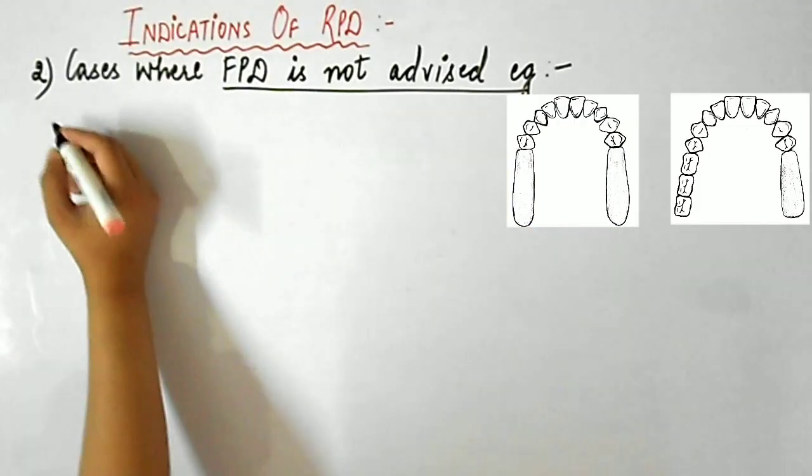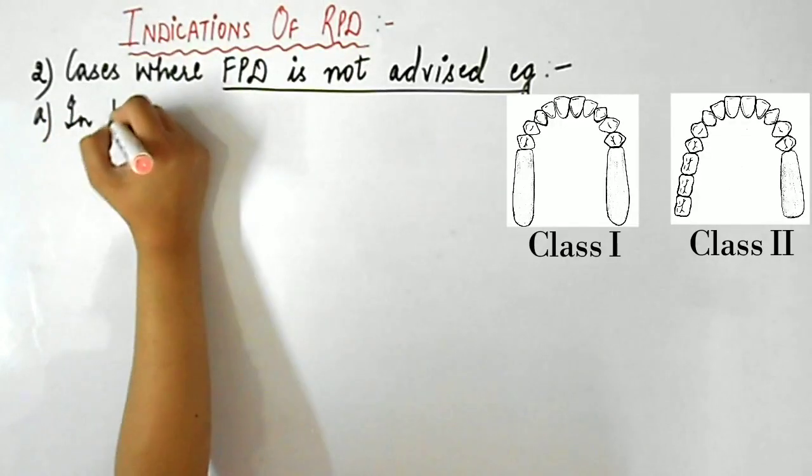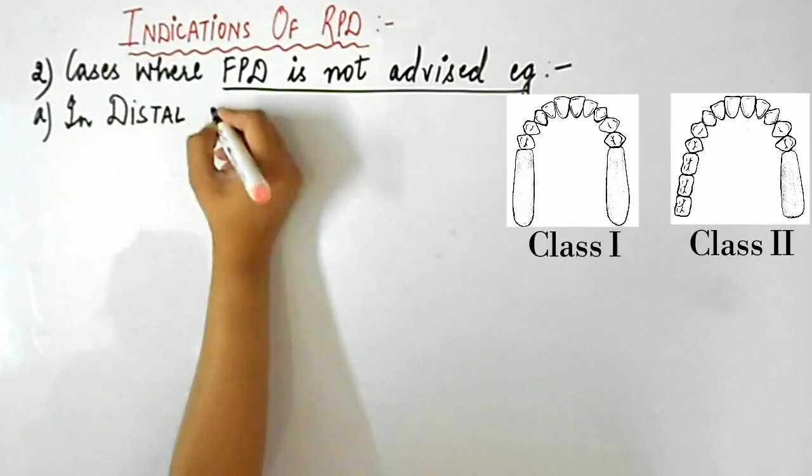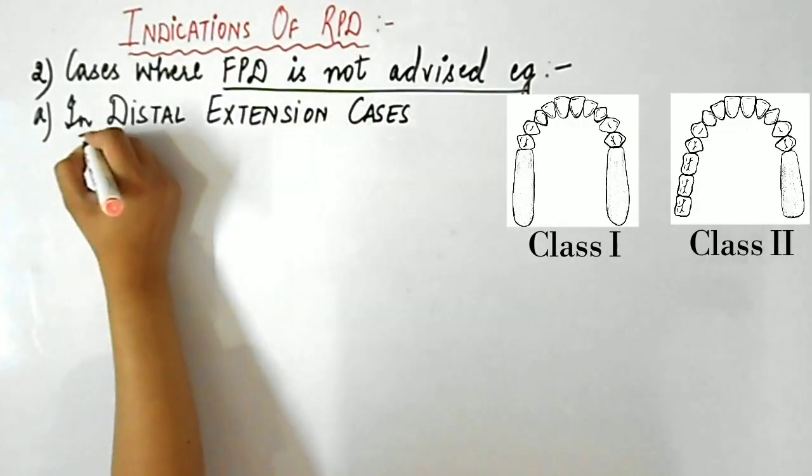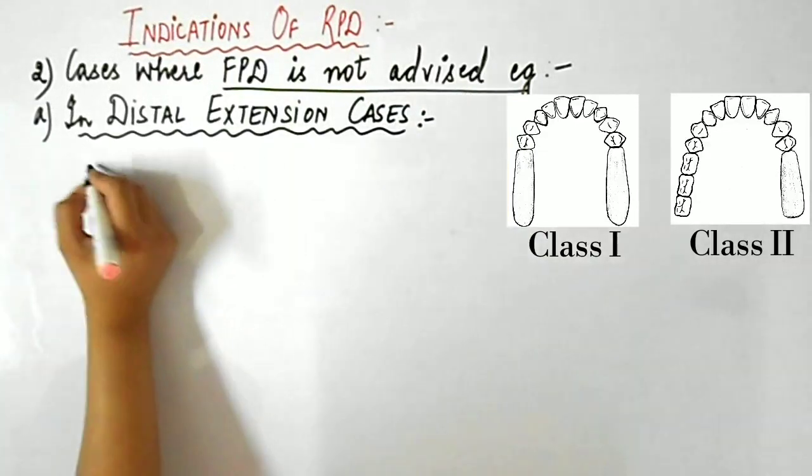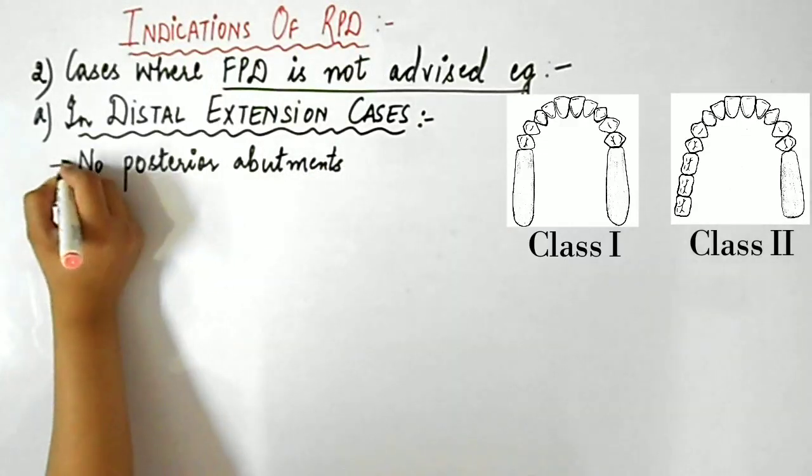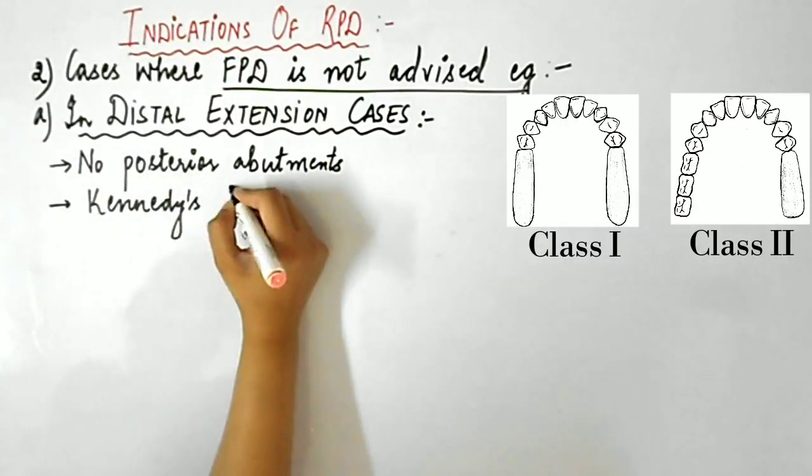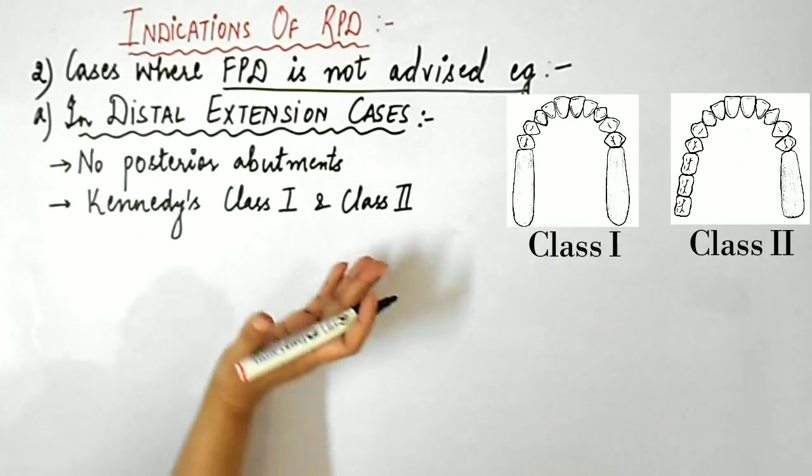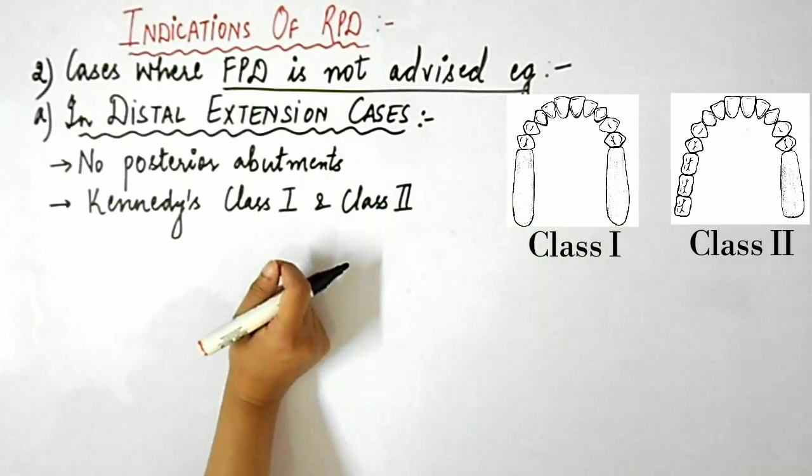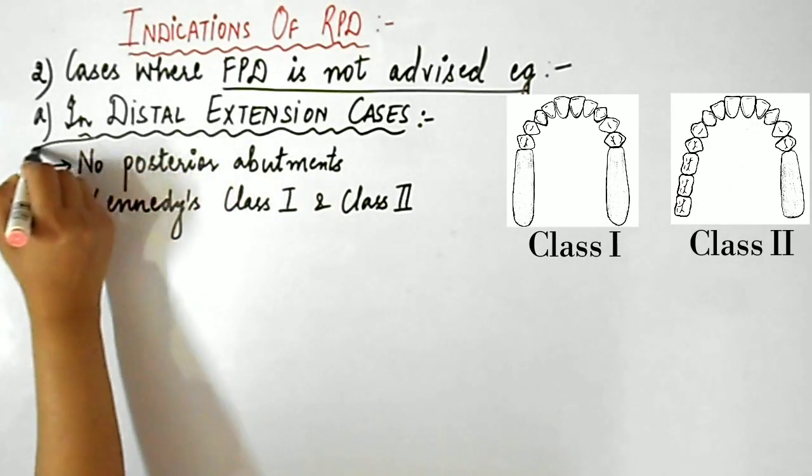Next indication is all those cases where fixed prosthesis is not advised, for example in distal extension cases. Distal extension situations are those where there are no posterior abutments for support, which are Kennedy's class 1 and class 2, as you can see in the diagram. I've talked in detail about Kennedy's classification in one of my previous videos. In distal extension cases, you cannot plan a conventional FPD for the patient.